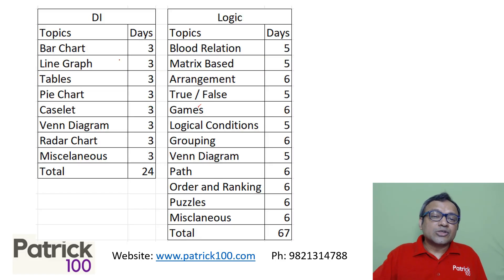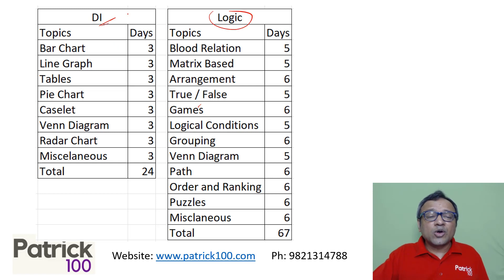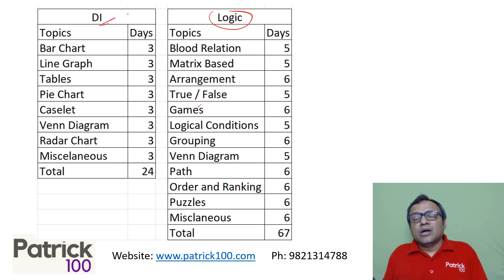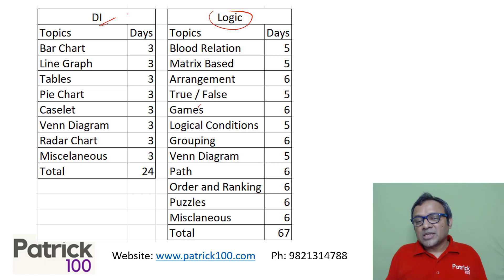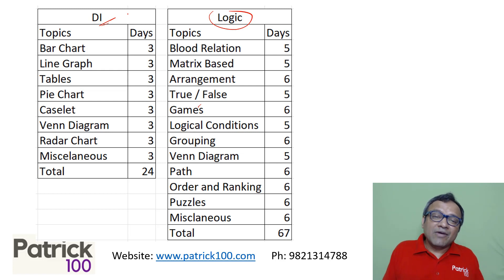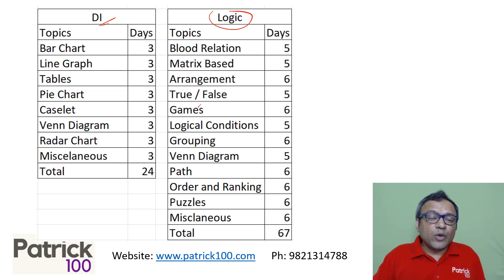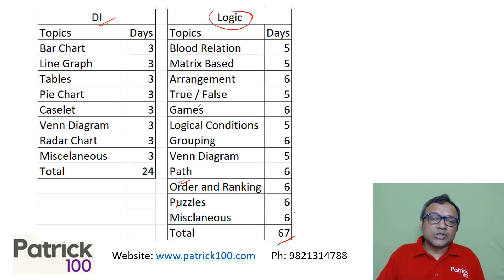Regarding DI and logic, I have given more time for logic than for DI because in the CAT exam, more questions are logic-based than DI-based. In the last CAT paper, there were four sets — three were logic-based and one was DI-based. So you have 24 days to complete the DI syllabus and 67 days to complete the logic.